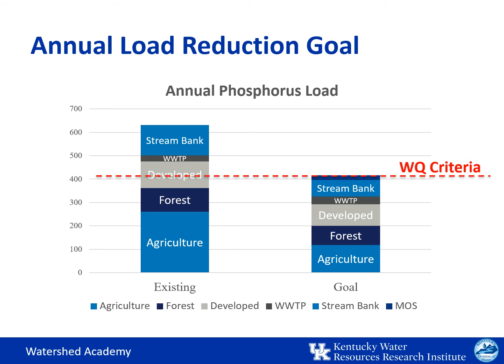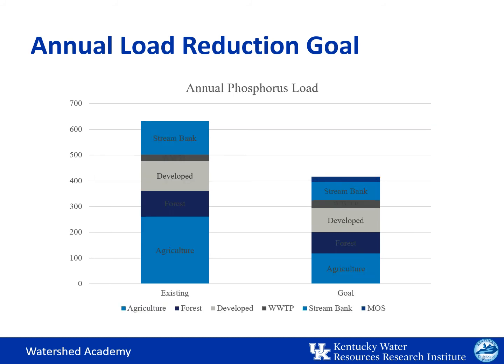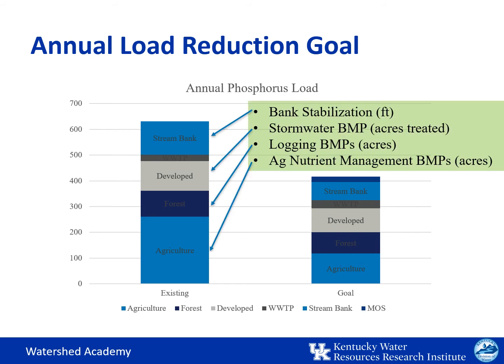Sources of phosphorus from developed, forested, and agricultural lands, as well as the stream bank itself, will need to be reduced. And in the next step of planning, we can begin to suggest ways to achieve these goals by recommending corresponding BMPs.